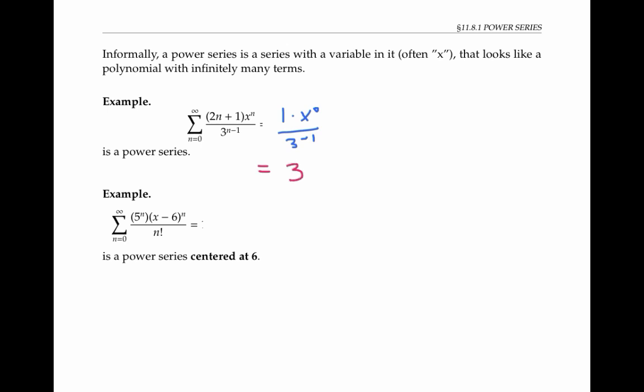The next term when n equals one is three times x to the one over three to the zero, we can rewrite this as three x, since three to the zero is one. The next term is five x squared over three, and we can continue like this.